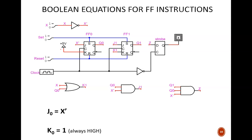Pause the video and work on the follow-along worksheet. Try to write the remaining equations for J1, K1, and the output Z. The equation for J1 is Q0 and X prime, taken straight from this AND gate. The equation for K1 is Q0 or X, taken straight from this OR gate. Finally, the equation for Z is Q1 and Q0 and X prime. Keep those equations handy as we move to the next slide.